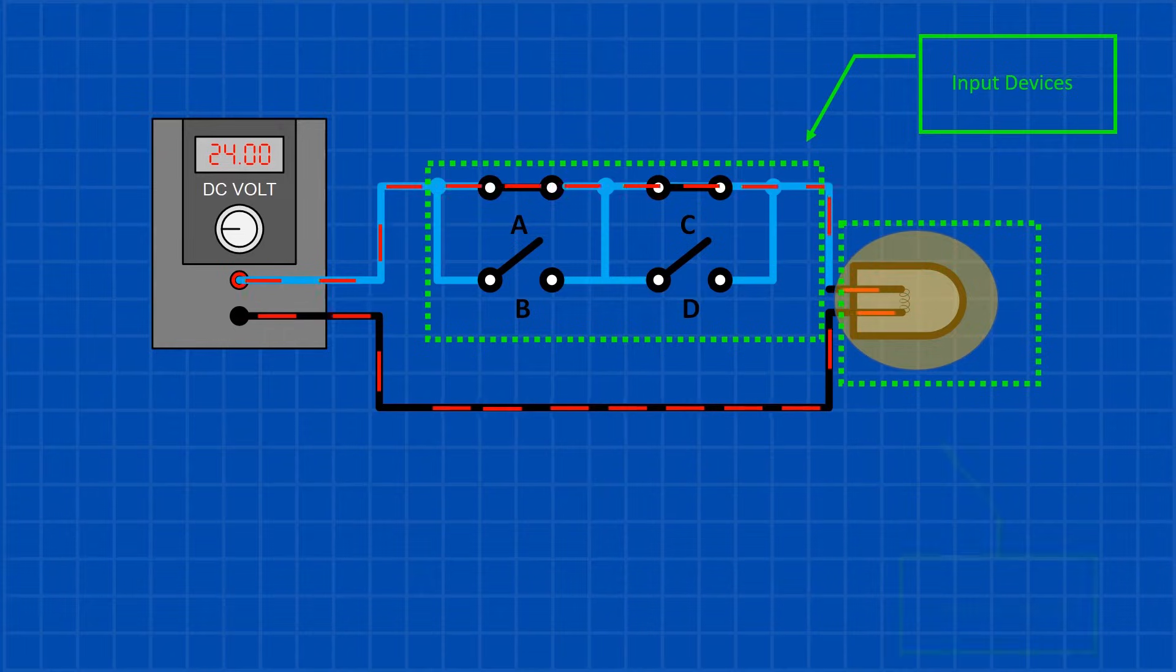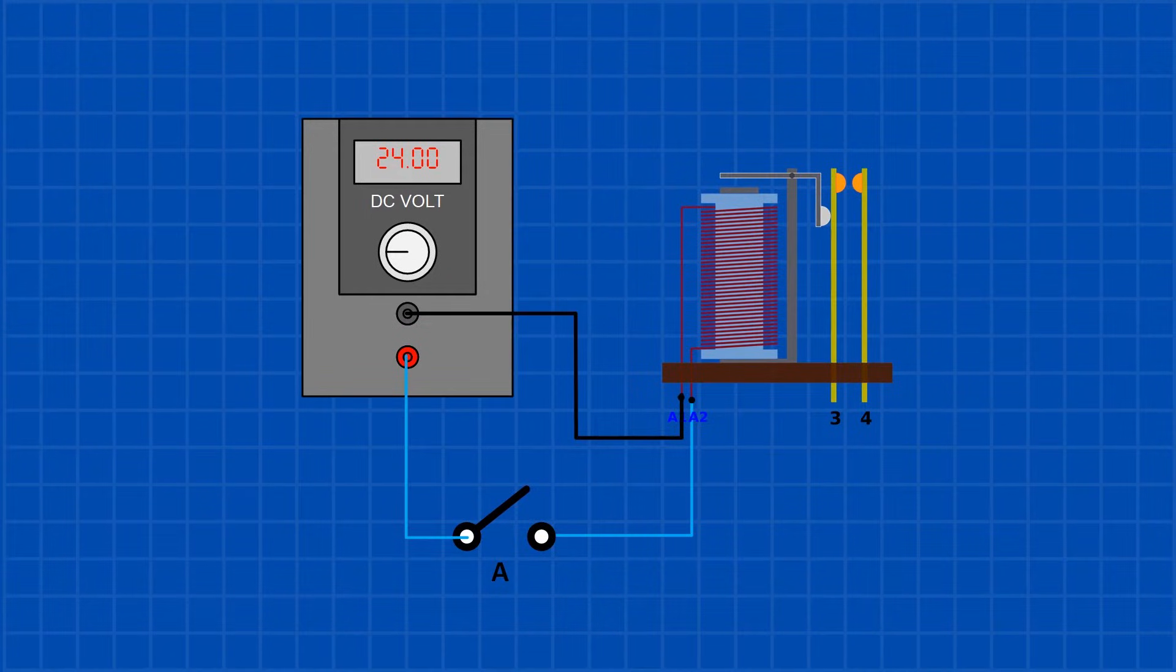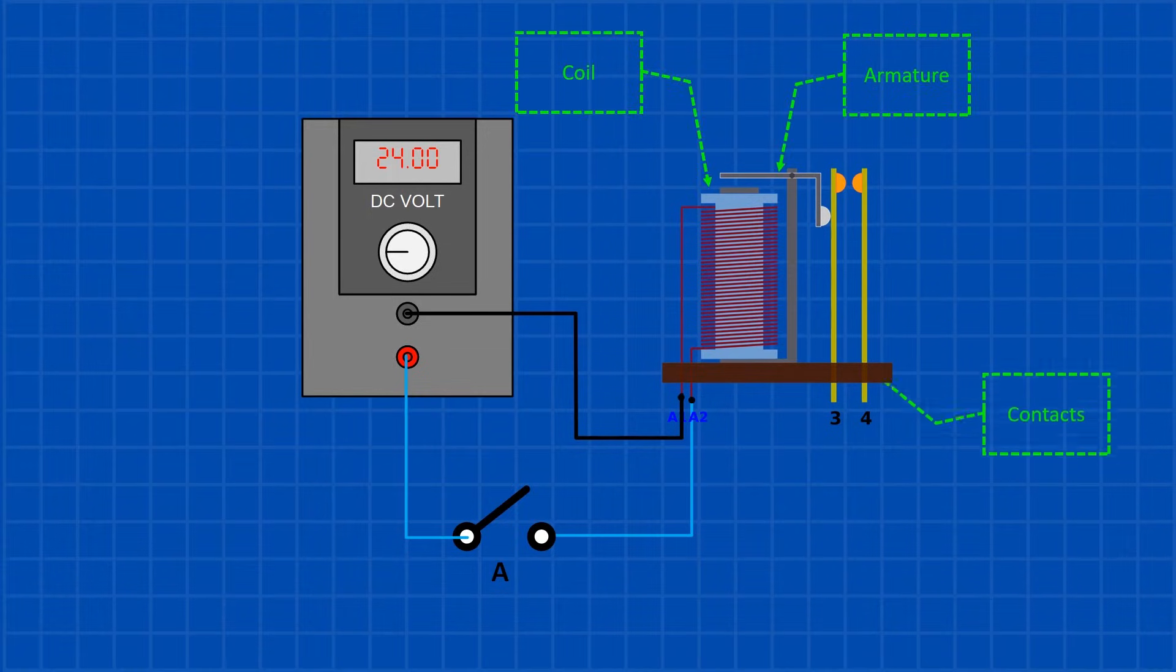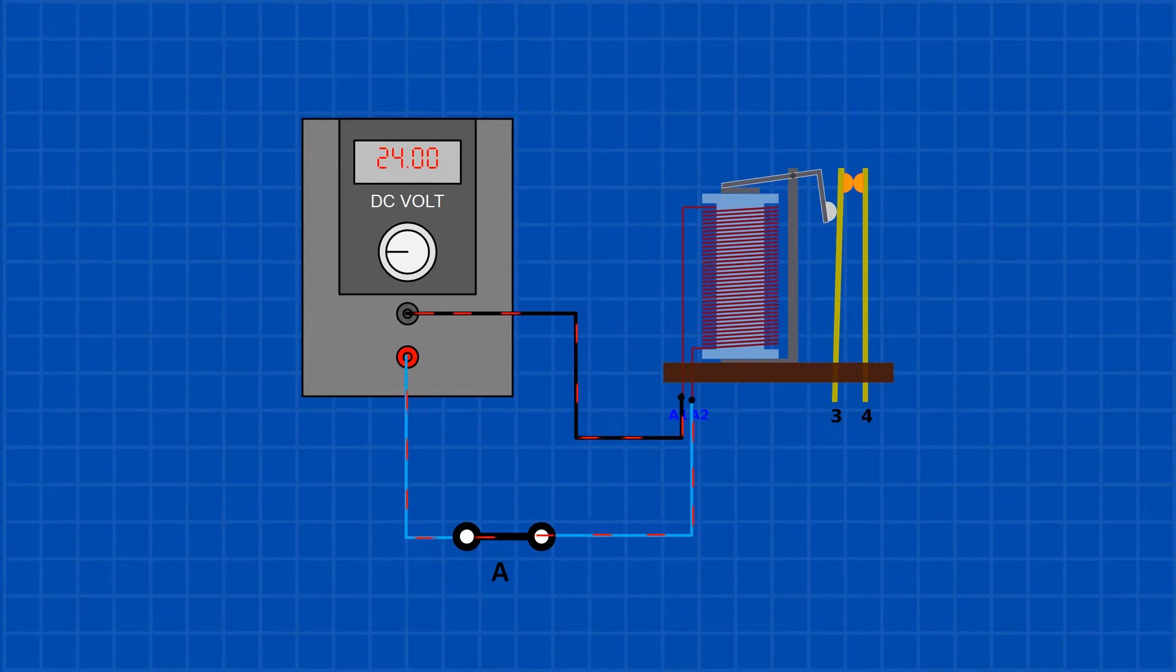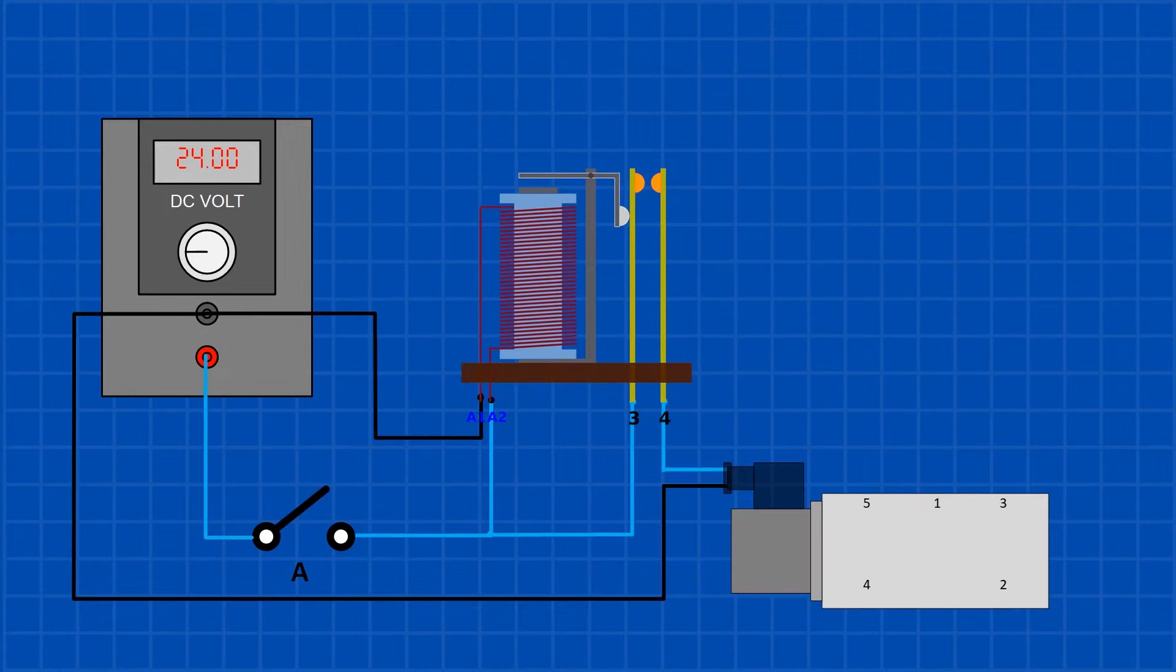So what is a relay and how does it work? A relay consists of an armature, a coil, and contacts. When we apply power to the coil, it will generate a magnetic field and pull the armature down. The armature pushes the contacts together and the contacts act like a closed switch.